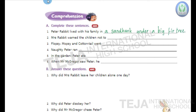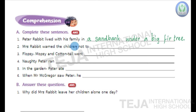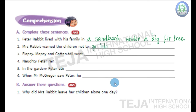End the sentence with a full stop. Second question: Mrs. Rabbit warned the children not to blank. What did mother rabbit warn the children not to do? Mother rabbit wanted the children to go down the lane or into the field, but not to go into Mr. McGregor's garden. Write the answer: not to go into Mr. McGregor's garden.